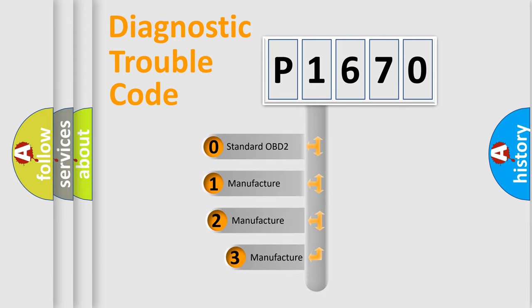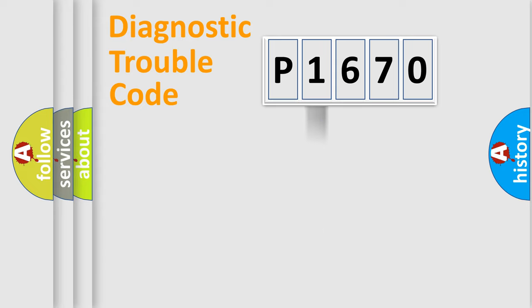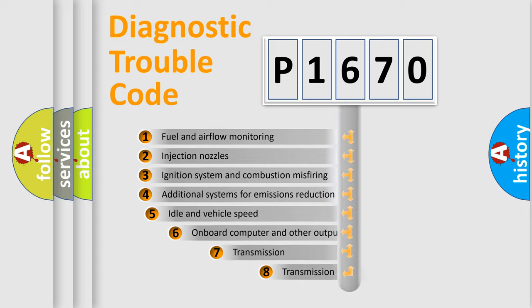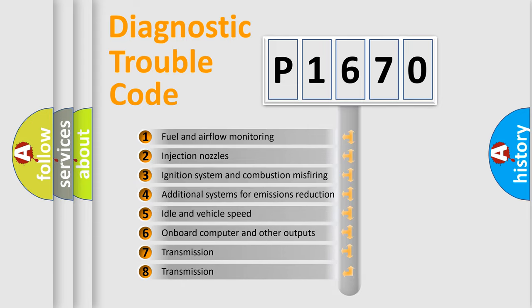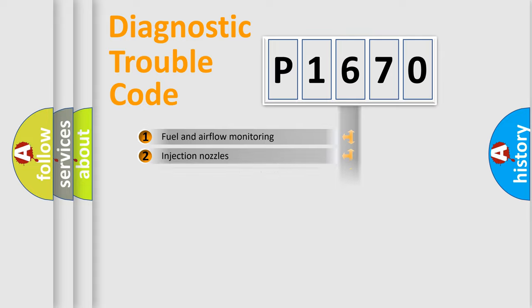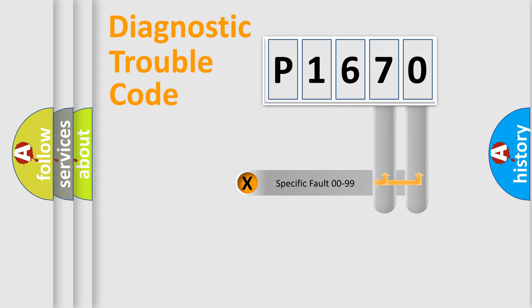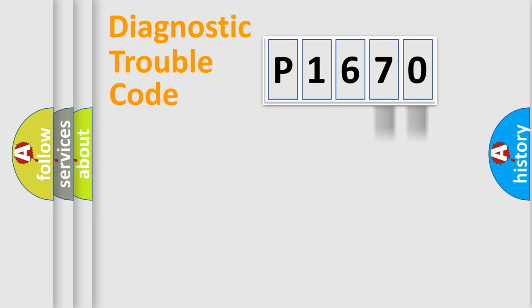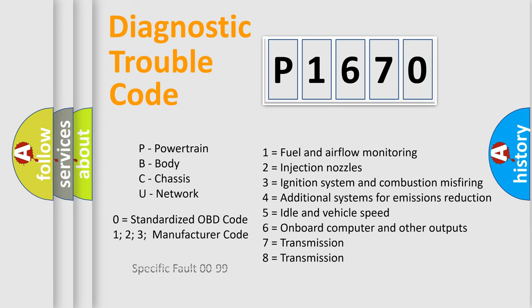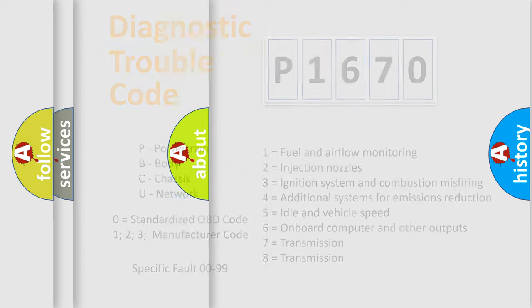If the second character is expressed as zero, it is a standardized error. In the case of numbers 1, 2, or 3, it is a more manufacturer-specific expression of the error. The third character specifies a subset of errors. This distribution is valid only for the standardized DTC code, where only the last two characters define the specific fault of the group.